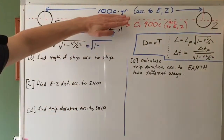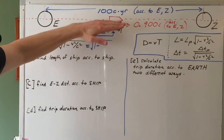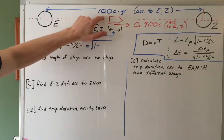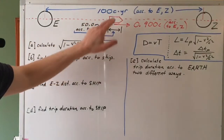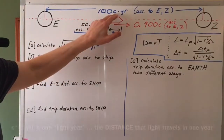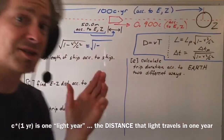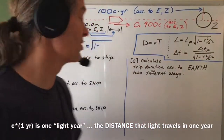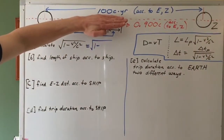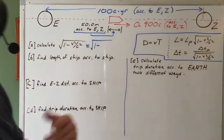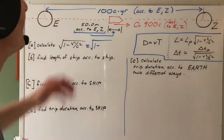Let me explain what 100 light years is. 100 light years is 100 times the speed of light multiplied by a year. So the speed of light multiplied by a year is a distance — it's the distance that light travels in one year. So 100 light years is 100 times the distance that light would travel in one year.